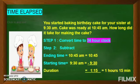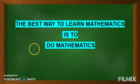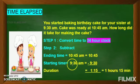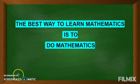I hope you have understood the concept. Just remember two steps: first, convert the given time into the 24-hour clock, and second, subtract — the ending time should be written on top and the starting time below it to subtract. I hope you understood, and just remember the best way to learn mathematics is to do mathematics. So keep practicing. Thank you for watching.